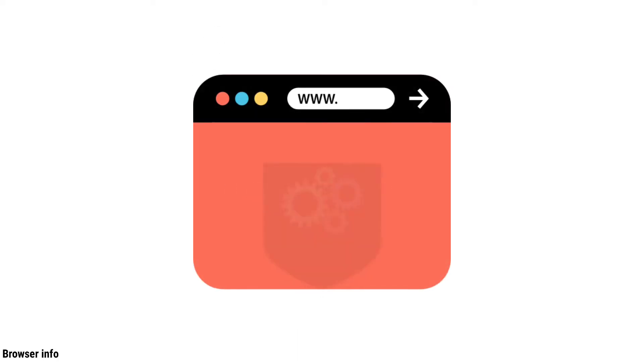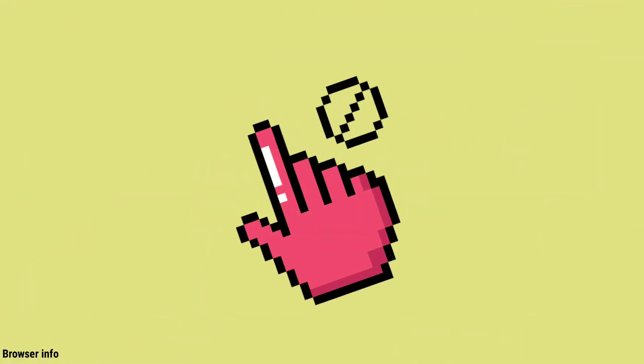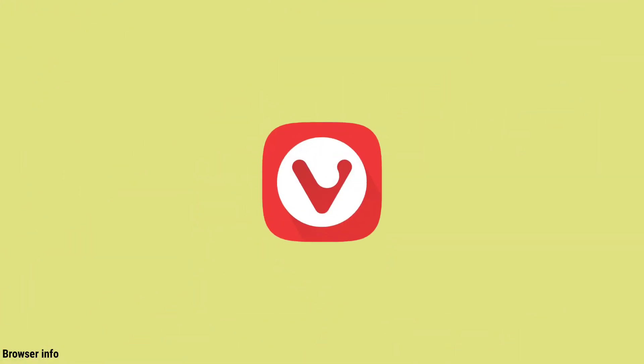We are using a remote with only a couple of buttons to navigate, so the browser must have an easy-to-access interface. Also, an ad blocker — ads can be pretty painful on TV. Most Android browsers need a lot of touching and tapping to get things done.